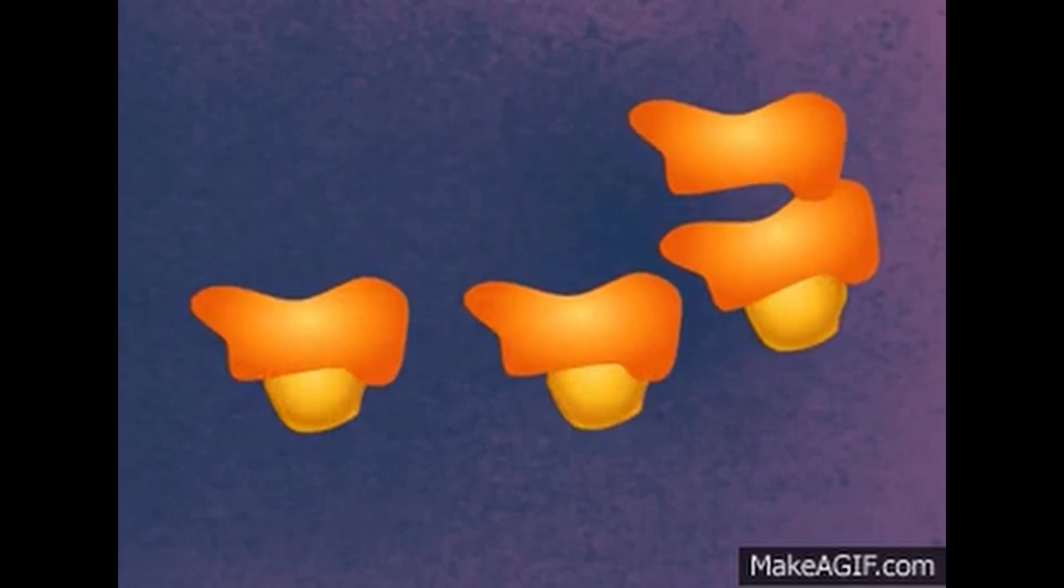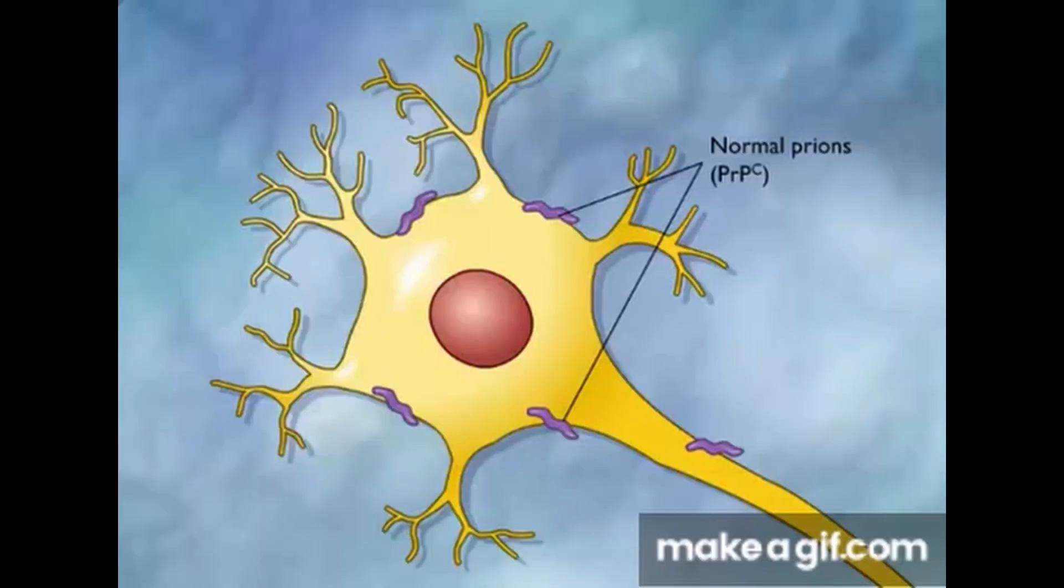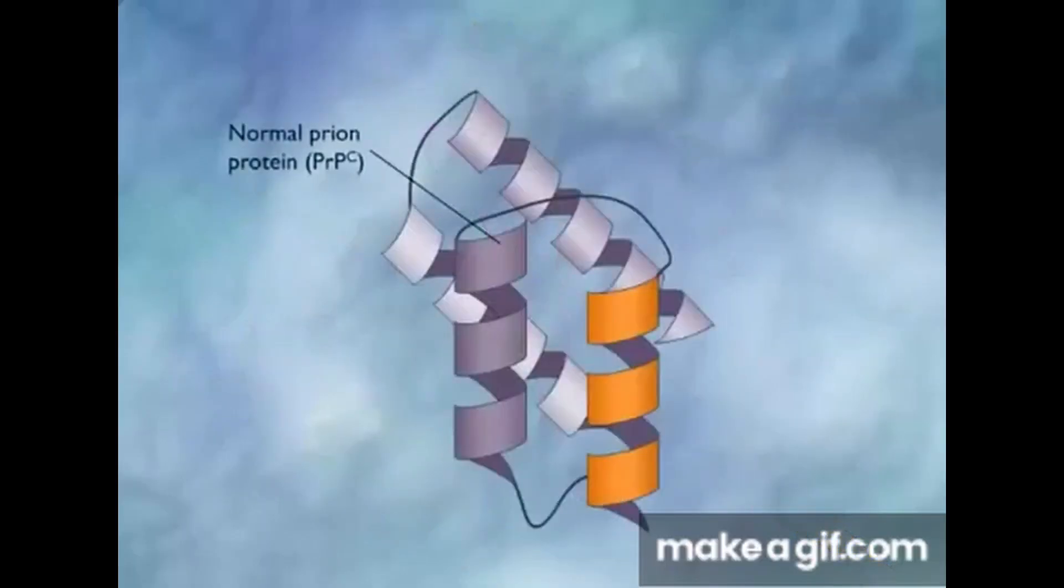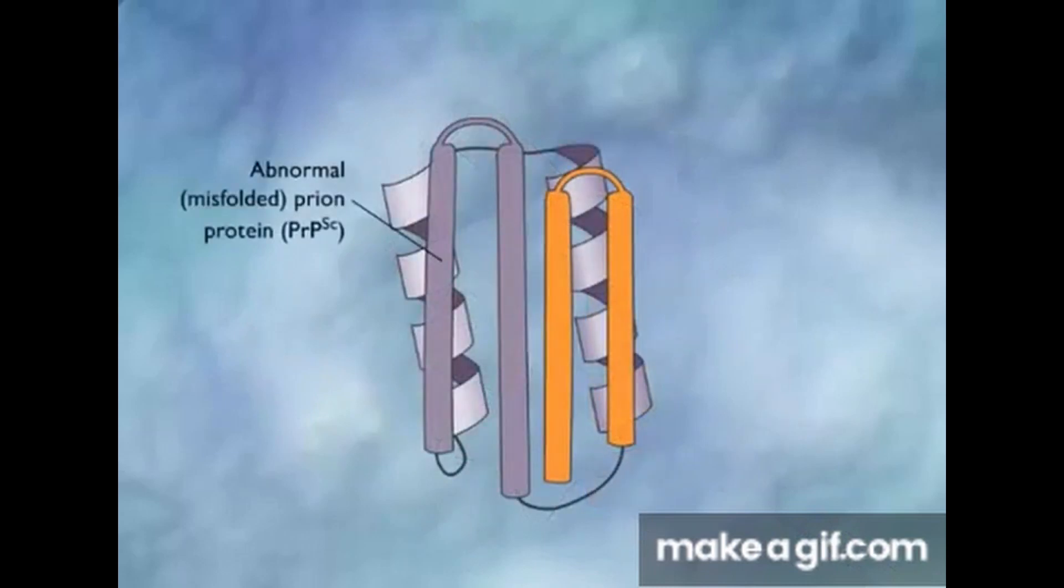Ventilation: Proper air exchange ensures oxygen supply and removal of metabolic waste. Stagnant air can hinder fruiting body development. Remember that the interplay of these factors contributes to the successful formation of Amanita phalloides fruiting bodies.